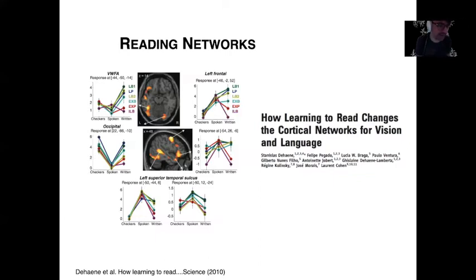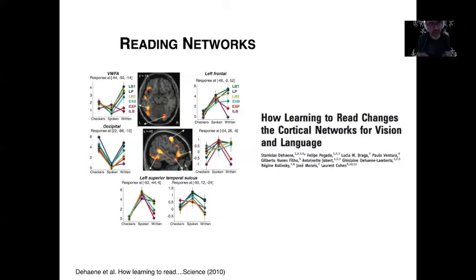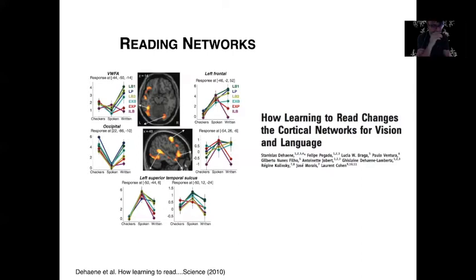They showed participants known words and asked them to read. When you compare patterns of activation between those who can read, those who cannot, and those who learned to read late in life, people who cannot read have a radically different pattern — they activate much less key regions such as the visual word form area, the left superior temporal sulcus, and the left frontal sulcus. This led to the idea that reading is the conversion between visual representation of syllables recognized in the visual word form area and the auditory representation in the left temporal sulcus, to finally produce it in the left frontal lobe.